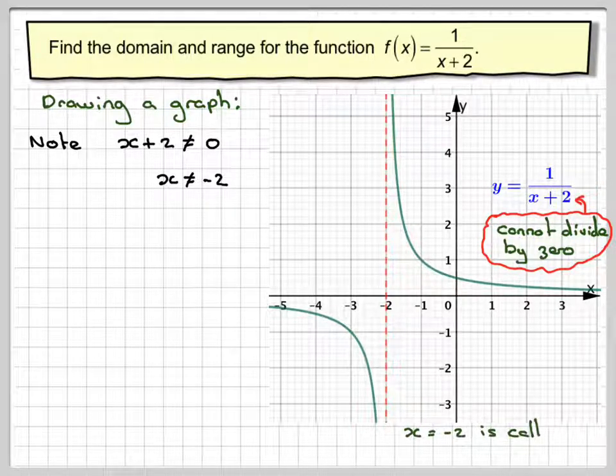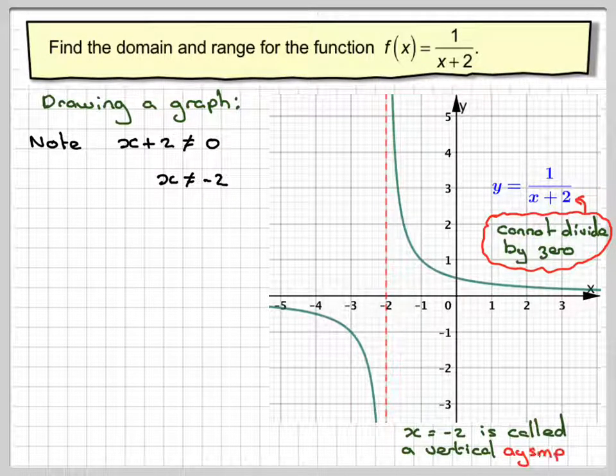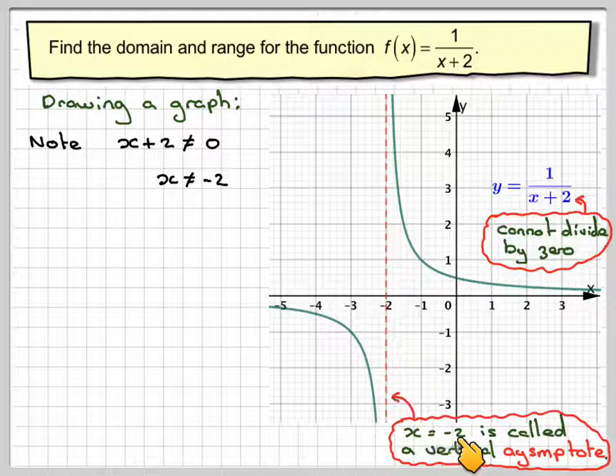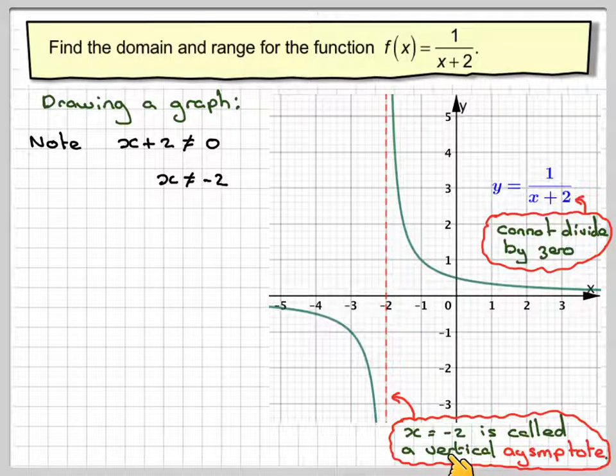And this dotted line has a special name which is probably not going to be needed at IGCSE but x is equal to minus 2 is called a vertical asymptote.